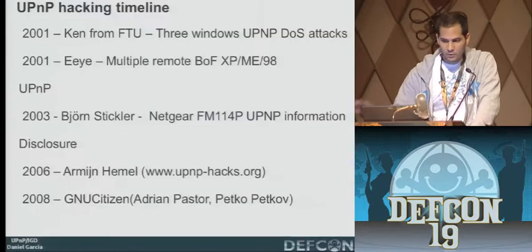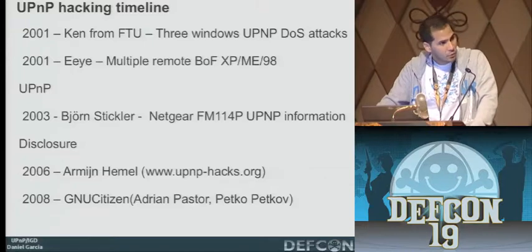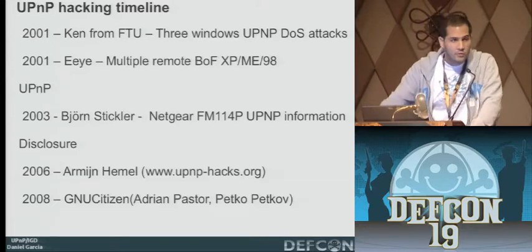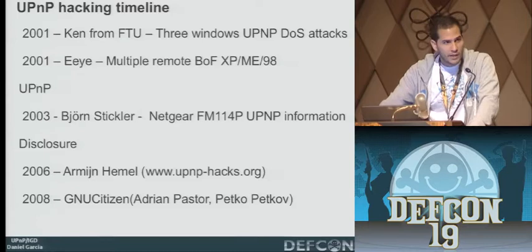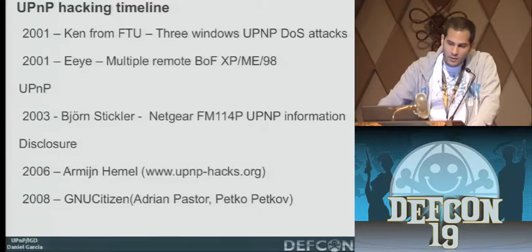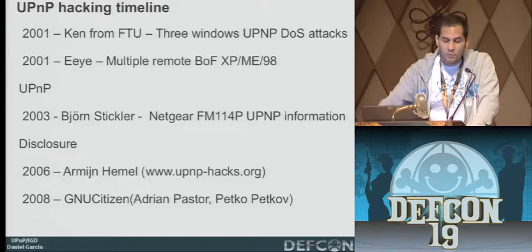Let's do a brief UPnP hacking timeline. It started in 2001 with FDU Security, who found denial of service attacks for the Windows XP UPnP stack — Microsoft having implemented UPnP in Windows XP first to promote the technology. Also in 2001, EI published buffer overflows for the same stack — that was pretty popular.